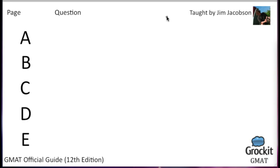Hello and welcome back everyone to Grokett's OGTV, the GMAT edition, where we're going through the official guide to the test, the 12th edition, like it says in the corner of the screen. Hopefully you all have your books in front of you. We are over halfway through the critical reasoning section. There are 124 questions in the critical reasoning section, and we're picking up with question number 89.